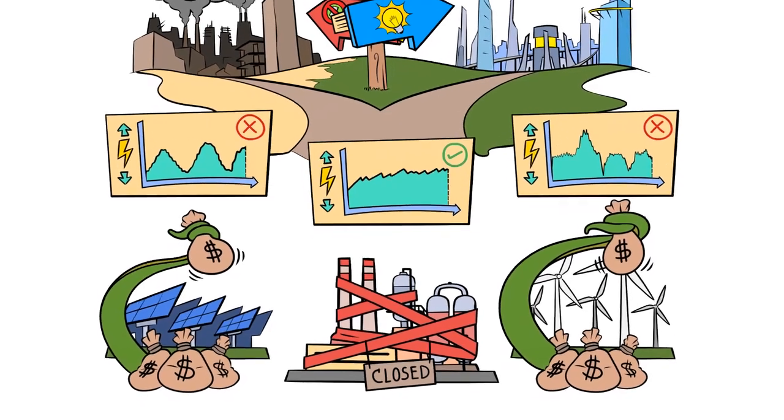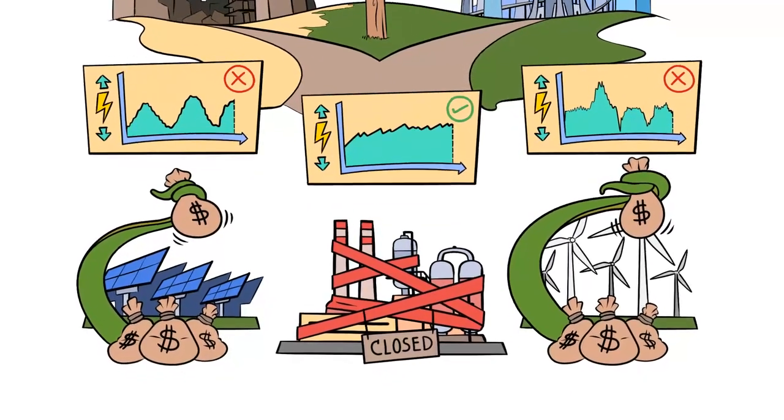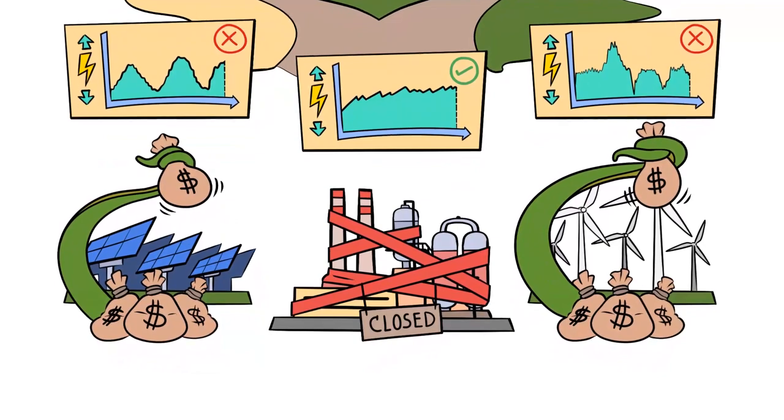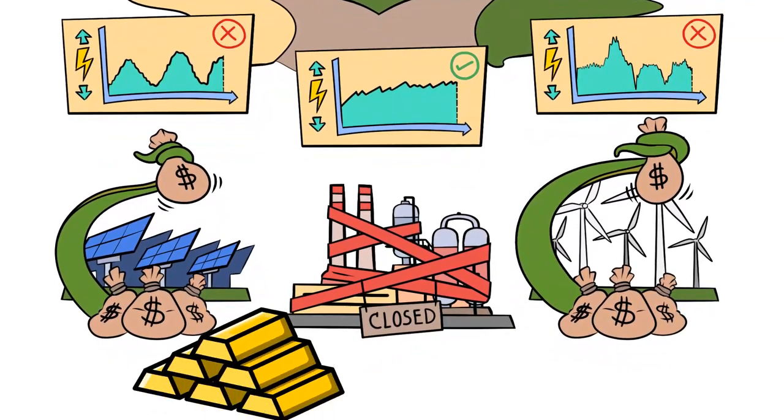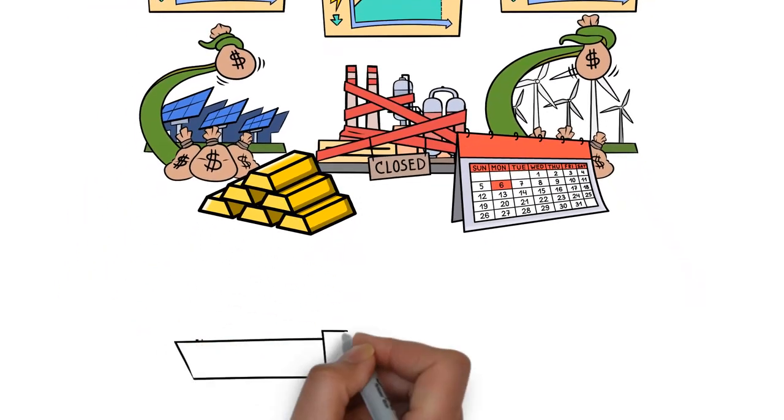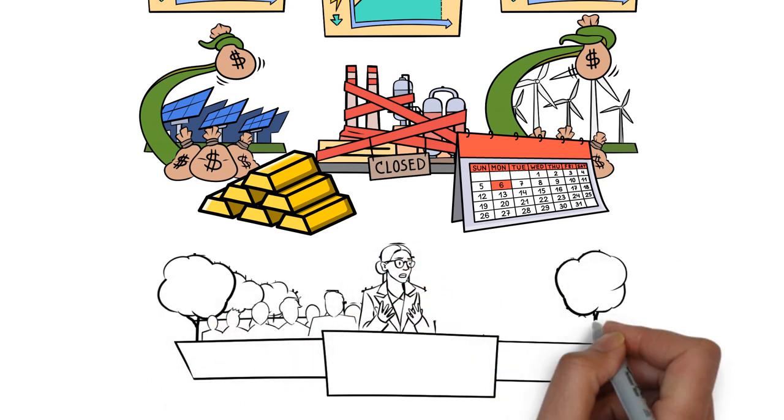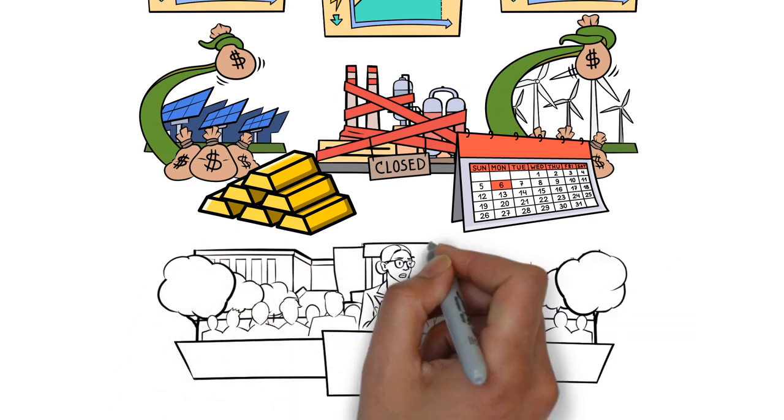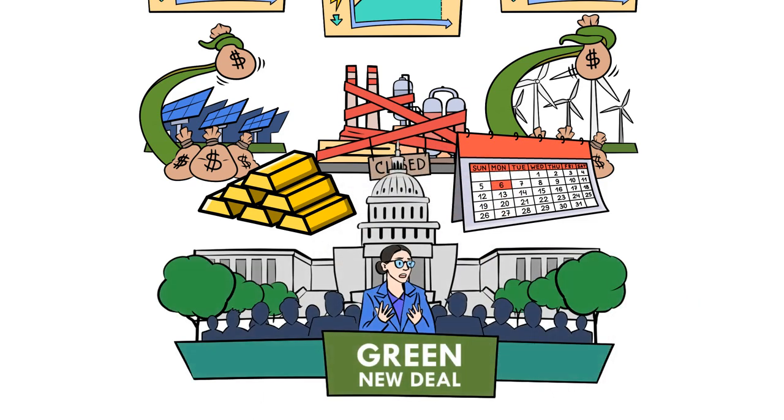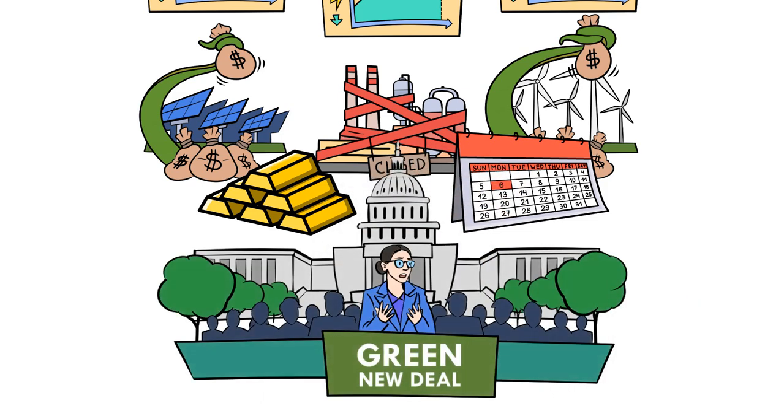The construction of oil and gas refineries and the production of other infrastructure necessary to grow energy production requires a tremendous amount of capital and time. So long as the shadow of major regulatory uncertainty and privileges for so-called green energy looms over the energy sector, we will not see the improvements necessary to better utilize our reliable energy resources.